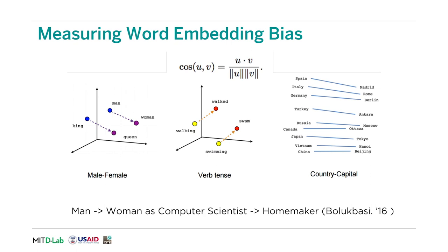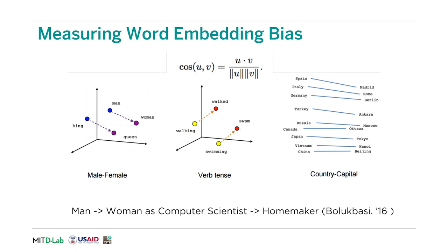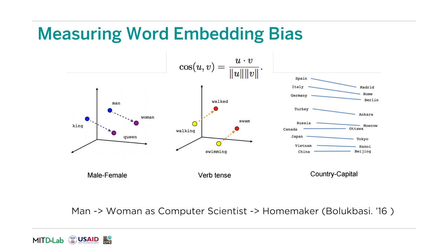We now cover the work on measuring word embedding bias. Word embeddings encode text into vector spaces where the distances between words describe semantic meaning. This allows one to complete the analogy 'man is to woman as king is to queen.' Unfortunately, researchers Tolga Bolukbasi and others found that even for word embeddings trained from Google News articles, bias exists — where the analogy becomes 'man is to woman as computer programmer is to homemaker,' in other words, housewife.